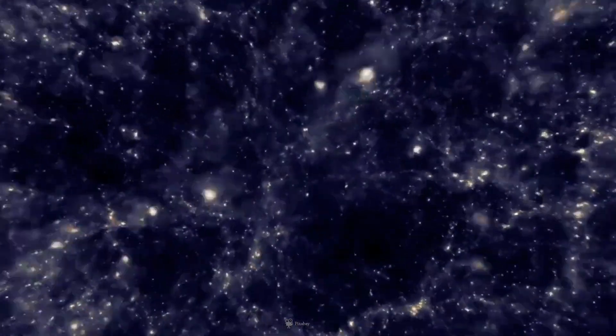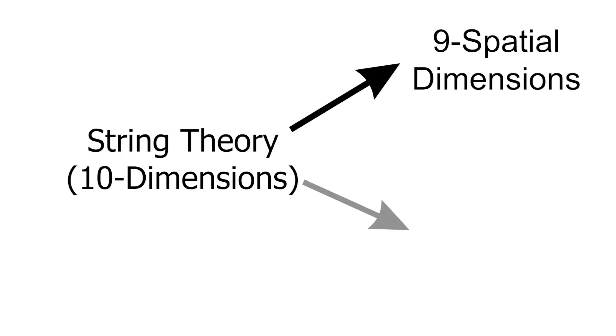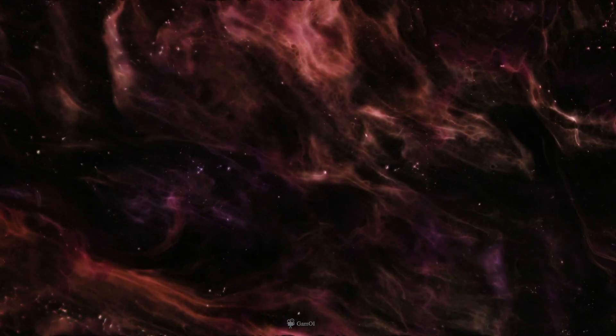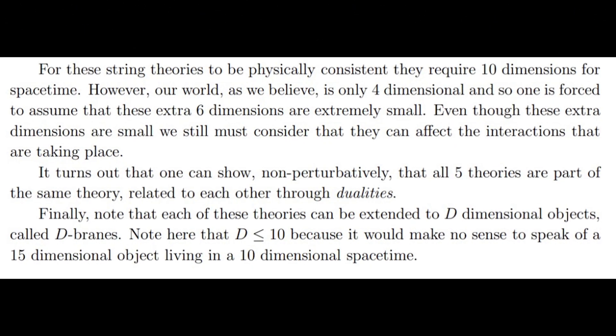String theory suggests that space-time can be ten-dimensional, meaning nine spatial dimensions and one time dimension. Some other theories even suggest that we can have more than 20 dimensions. For this video, let's just look at the dimensional aspects proposed in string theory.